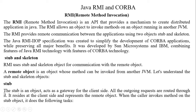First we will discuss the stub. What is stub? Stub is an object that acts as a gateway for the client side. Stub will be in the client side and the skeleton will be placed in the server side. All outgoing requests are routed through it.